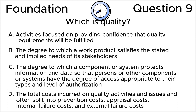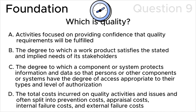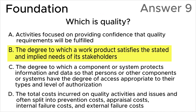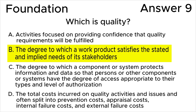Please press pause to choose your own answer before you see the correct answer on the screen. The correct answer is B: the degree to which a work product satisfies the stated and implied needs of its stakeholders. This answer is based on the definition of quality in the ISTQB glossary.